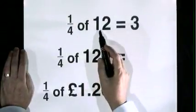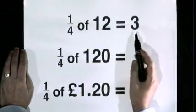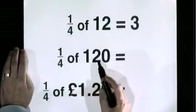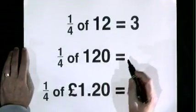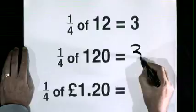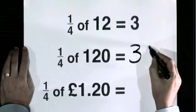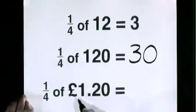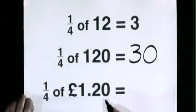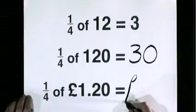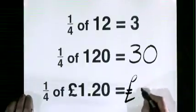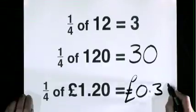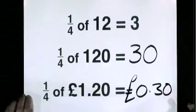A quarter of 12 is 3. A quarter of 120 is 30. A quarter of 1 pound 20 is no pounds 30, or 30p.